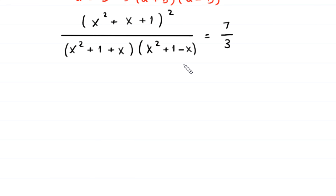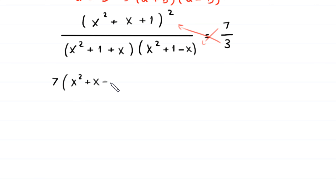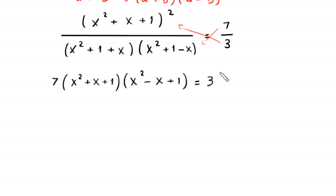Now we use cross multiplication. We multiply 7 by the denominator expression and 3 by the numerator expression. This becomes: 7 times (x² + x + 1)(x² − x + 1) = 3 times (x² + x + 1)².